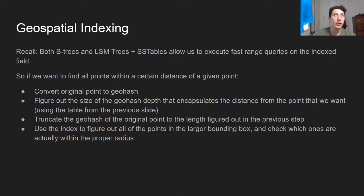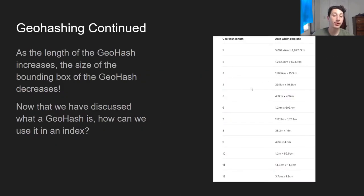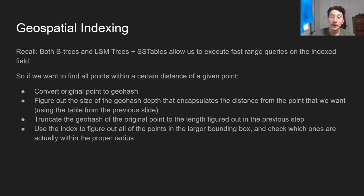Let's say we have a given point and we want to find the points near it in our geospatial index. First, we take our point, which is probably a lat-long coordinate, and convert it to a geohash using available services. Then we figure out the size of the geohash depth that encapsulates the distance from the point that we want. If we want to find all points within a few miles, maybe depth 5 looks good because it's 4.9 kilometers squared. Most of the points we want are going to be within the same geohash of depth 5. Then we truncate our geohash to the proper depth and use our index to execute a range query to quickly find all of the points inside of the bigger geohash. Once we get all those points, we probably have to filter a few of them because the bounding box isn't perfect, but it greatly limits the field of points we have to check.